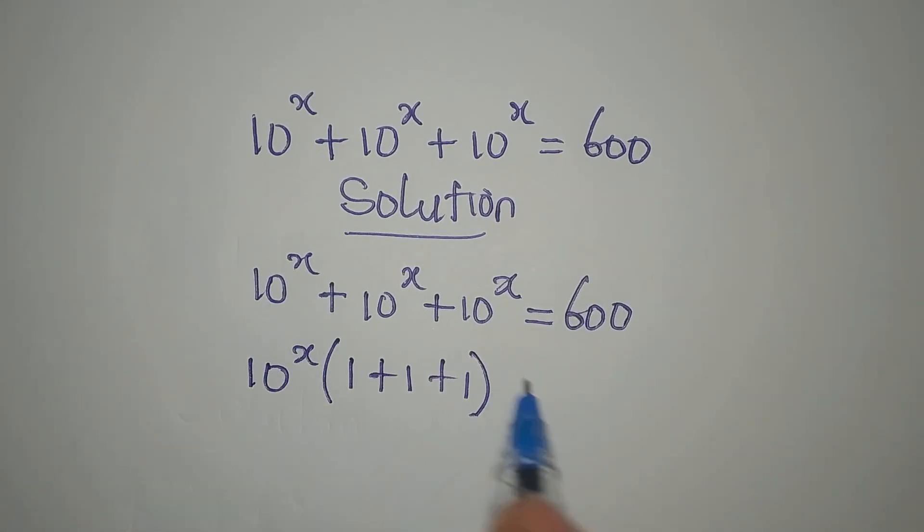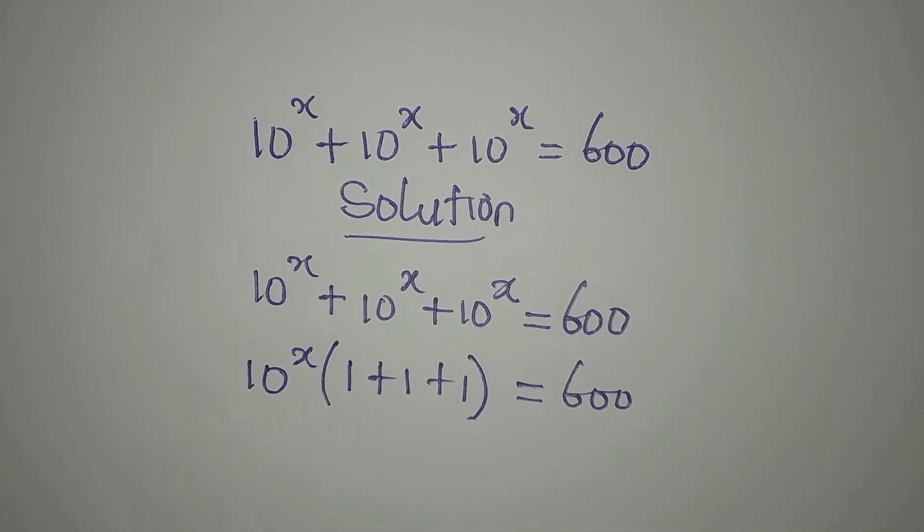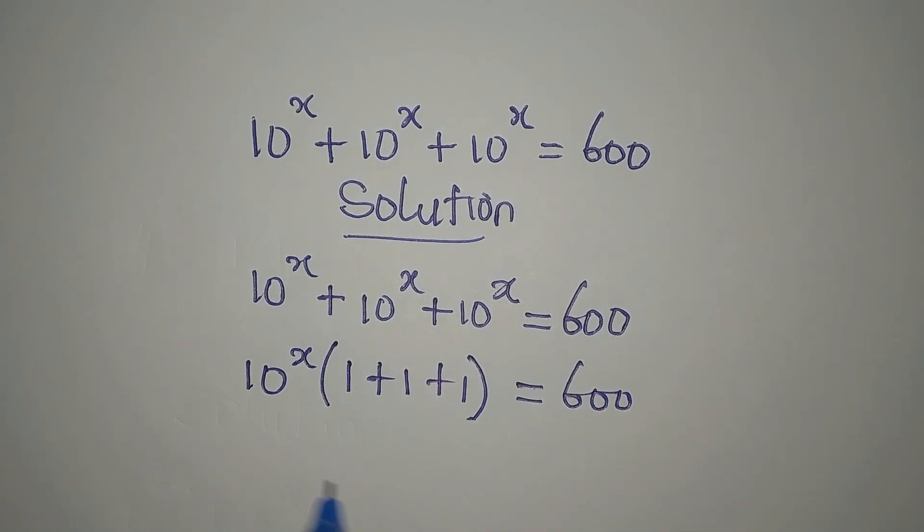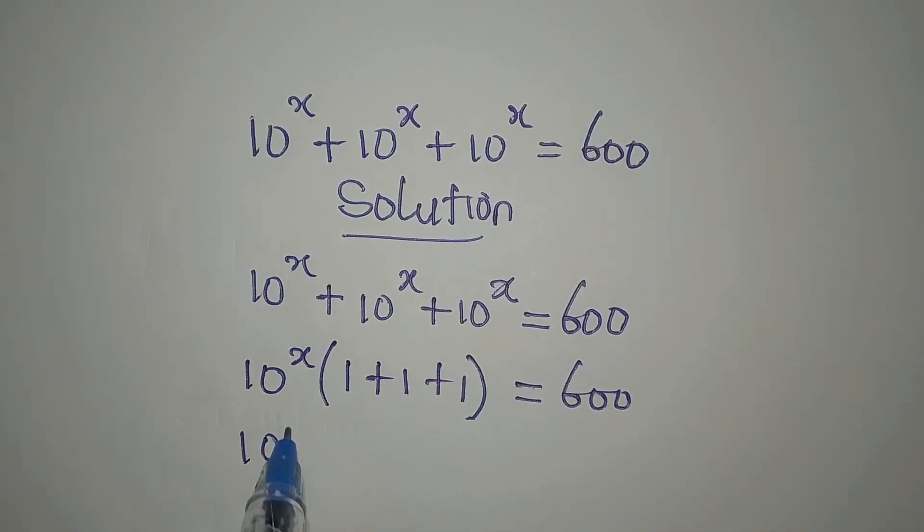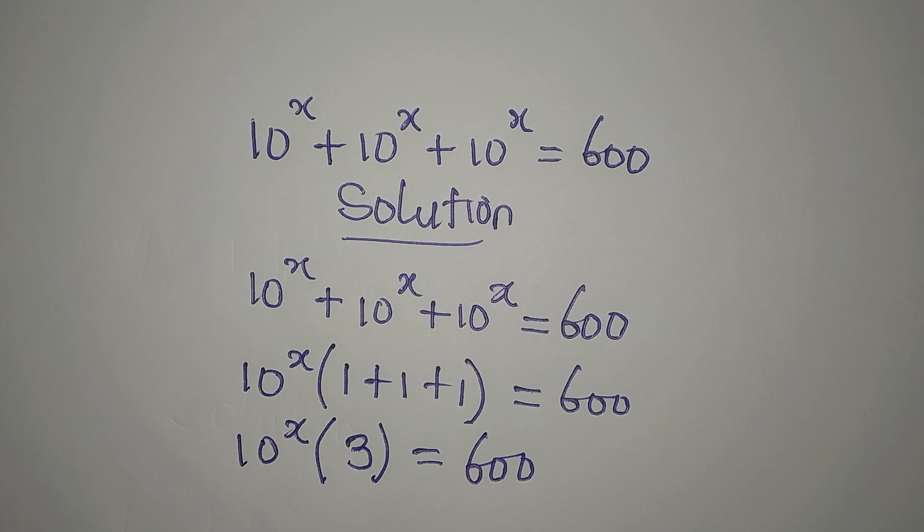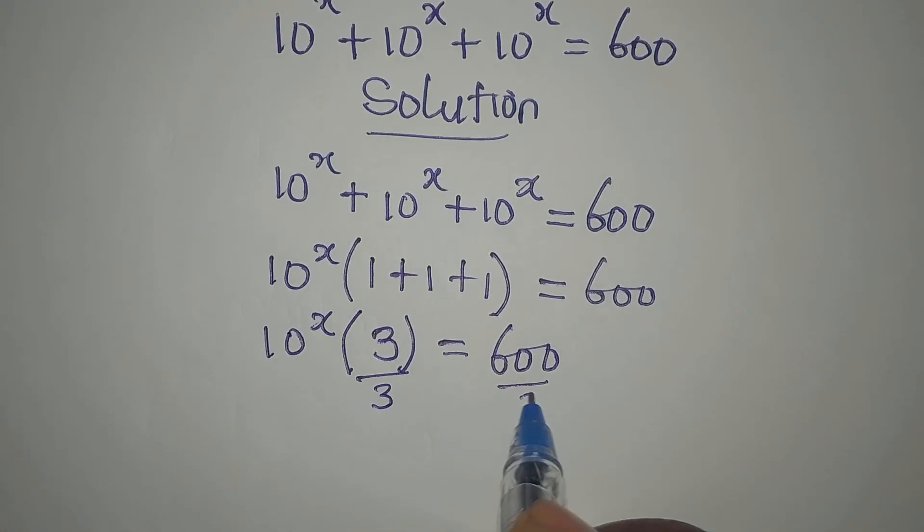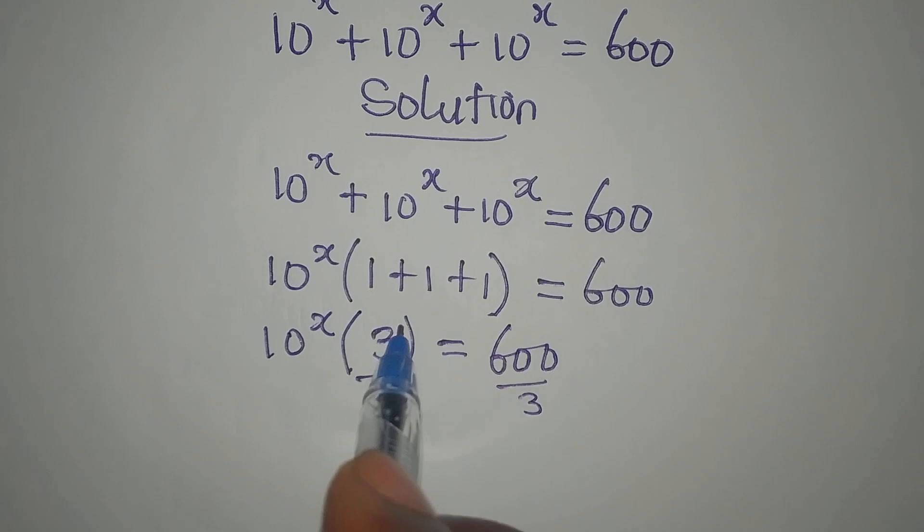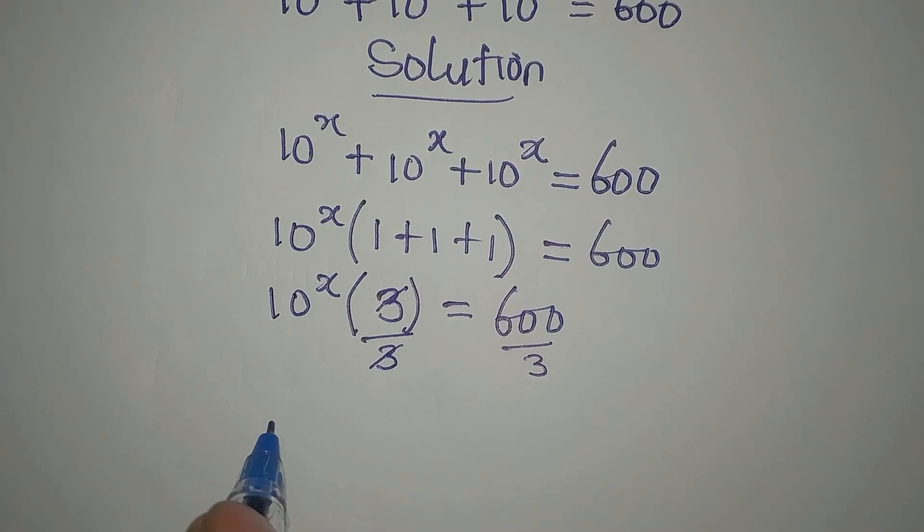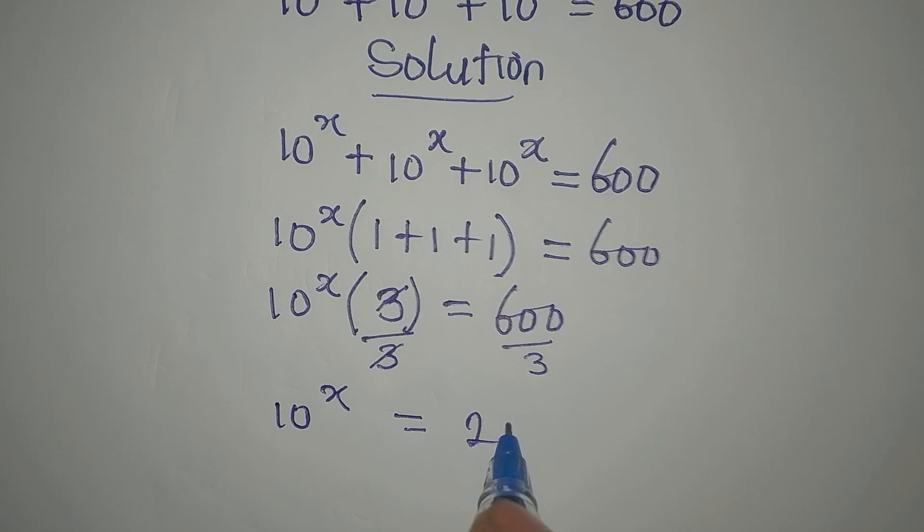So this is now equal to 600. This is 10 to the power of x times 3 equals 600. Now we will divide this by 3. This can go, so 10 to the power of x is equal to 200.